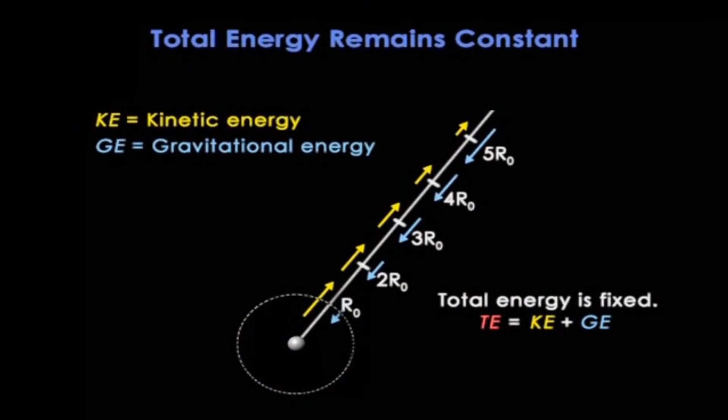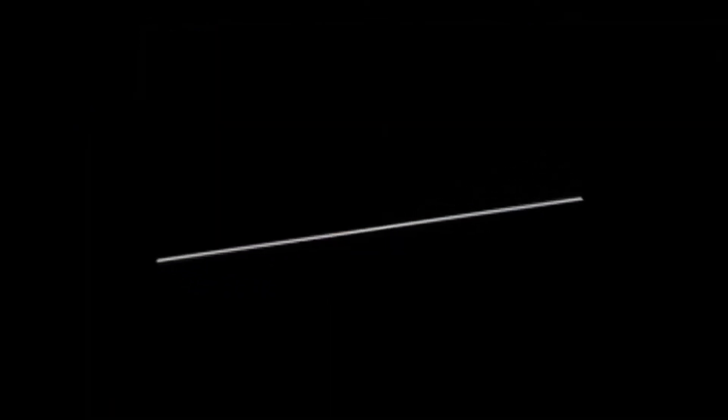So let's rotate this diagram over and make expansion size our x-axis. Now let's make the y-axis energy, with zero in the middle, so positive energy is above and negative energy is below. I'm going to show you a number of graphs of this kind, and they really help to see what's going on.